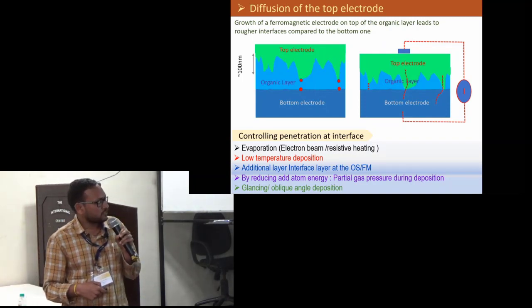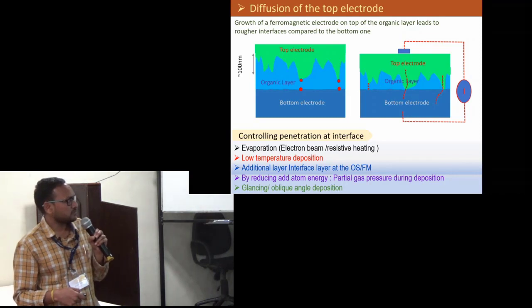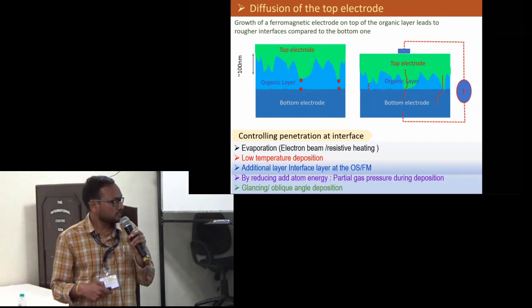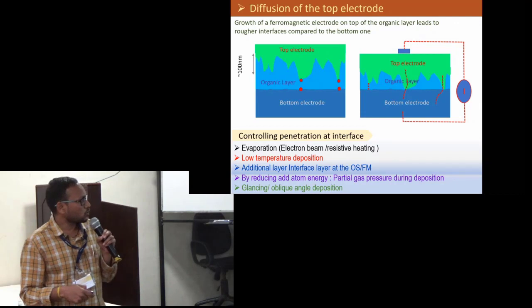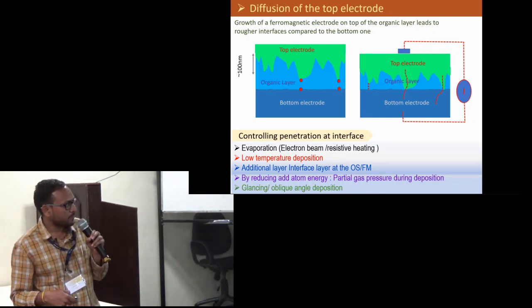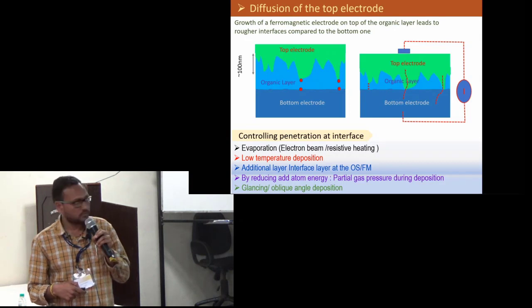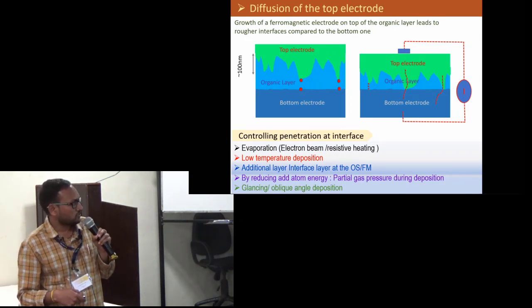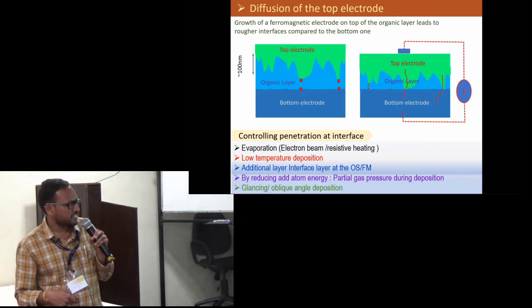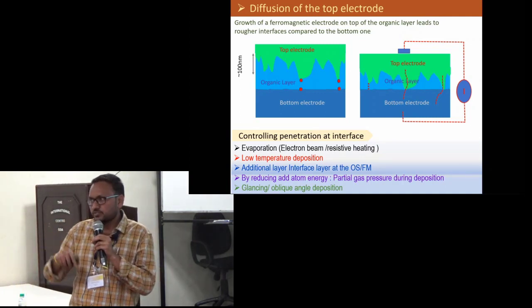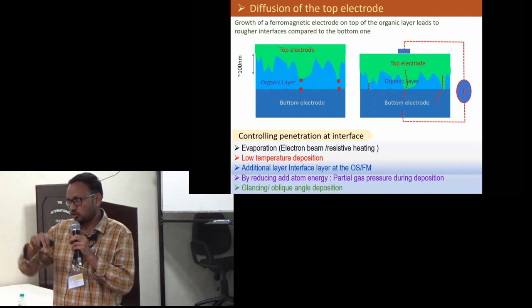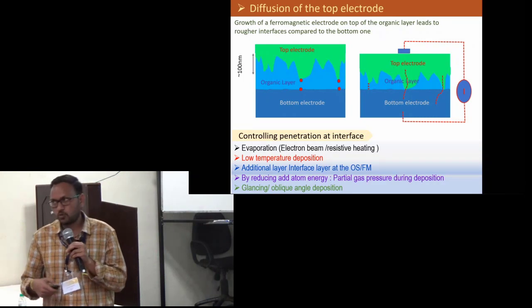Some efforts have been done like evaporation by electron beam or heating, low temperature depositions, or taking a barrier layer between the organic metals and the top electrodes. One of the best is the glancing or oblique angle deposition to reduce the penetration of the metal into the polymers.